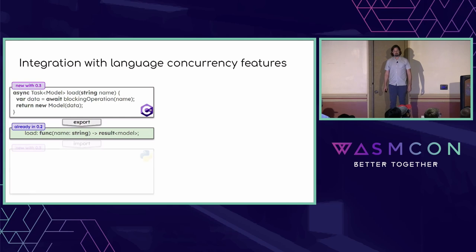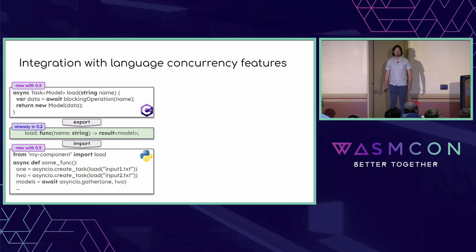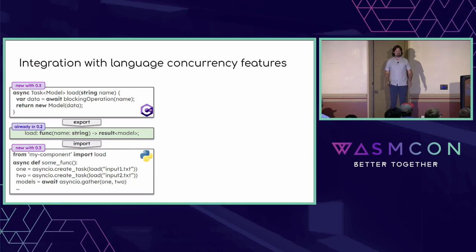Then I can import this load function from Python, which can import load as a coroutine. In Python, I can use asyncio to spawn multiple concurrent load tasks before gathering them. Now I'm doing a cross-language concurrent call fairly naturally — when the first load blocks, the second one gets to make progress. I can do this for all the existing function signatures I could express in 0.2.